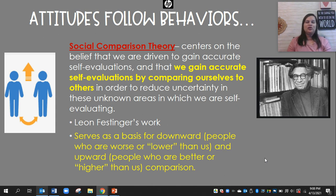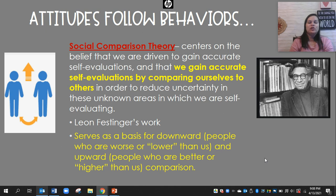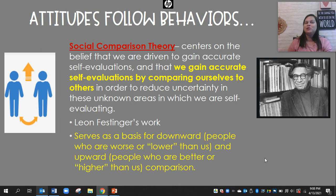The social comparison theory says that we are driven to gain accurate self-evaluation, and we evaluate ourselves by comparing ourselves to others in order to reduce uncertainty. Leon Festinger said this serves as a basis for downward comparison — people who are worse off or lower than us — and upward comparison — people who are better or higher than us. We tend to look at people we consider more successful than us, and people we are more successful than, as a way of social comparison.